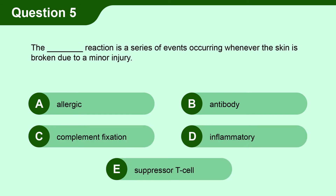Question 5. The blank reaction is a series of events occurring whenever the skin is broken down due to minor injury. A. Allergic, B. Antibody, C. Complement fixation, D. Inflammatory, E. Suppressor T cell.